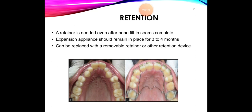To summarize the types of expansion: dental alveolar vs. skeletal expansion; rapid expansion at 0.5–1 mm per day; slow expansion at 0.5–1 mm per week; implant-supported expansion takes no support from dental structures and achieves almost entirely skeletal change, so rapid expansion is not needed. No matter which means of expansion is achieved, a retainer is needed even after bone fill appears complete. The best choice is that the expansion appliance should remain in place for at least three to four months, then replaced with a removable retainer or other retention devices.